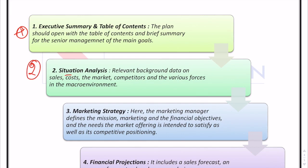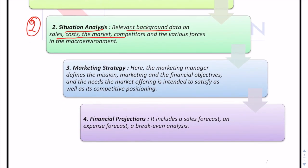The second section is situation analysis, where the marketer analyzes the macro environment the business is working in. It is a background check on sales, costs, markets, and competitors, and defines how big the market is, how fast it is growing, its growth potential, and how much profitability the company can derive. The marketer reviews the environment before taking action. Here the marketer can also perform a SWOT analysis to identify the business's strengths, weaknesses, opportunities, and threats in the business environment.